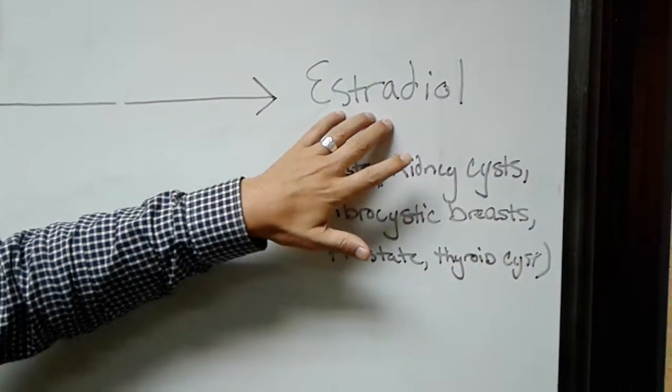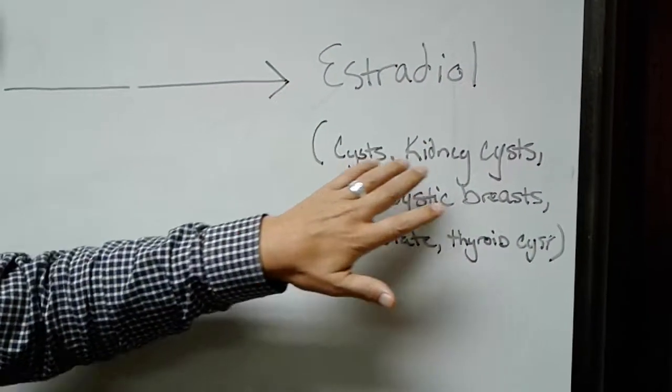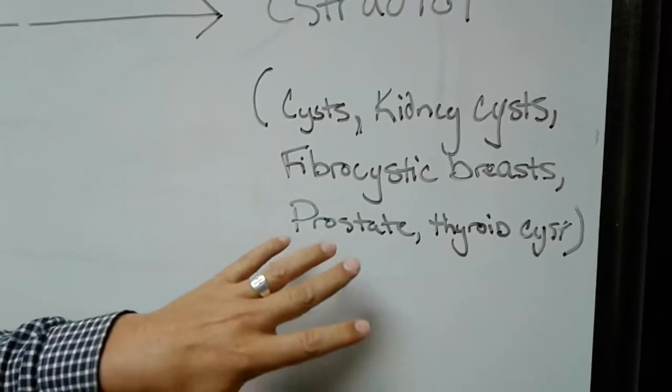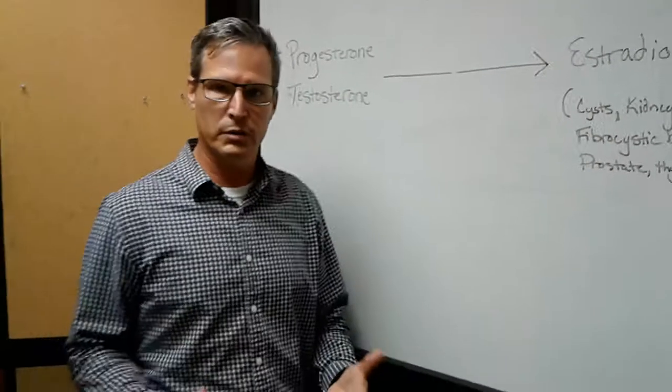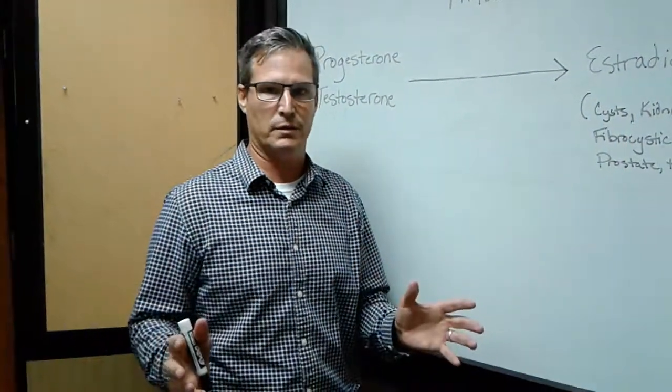That's called estrogen dominance and that leads to cysts, kidney cysts, fibrocystic breasts, prostate, thyroid issues, plus increased risk of breast and prostate cancer.